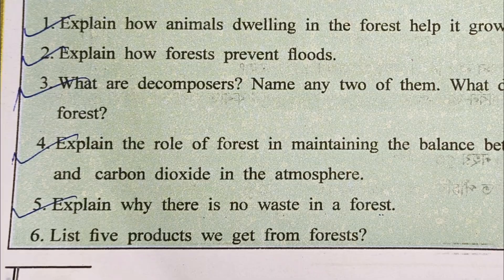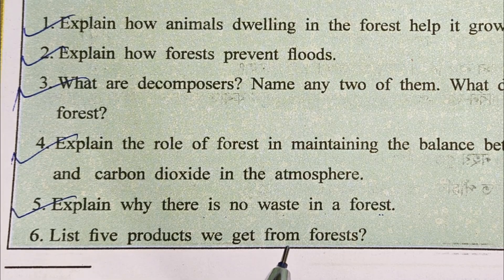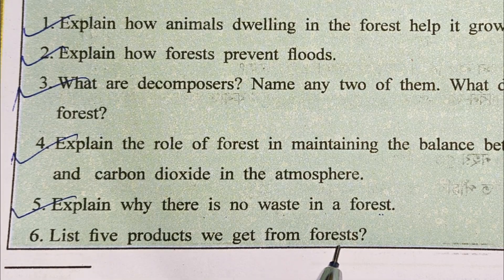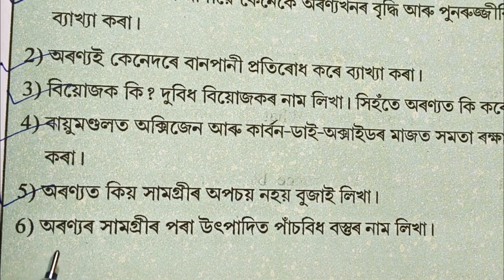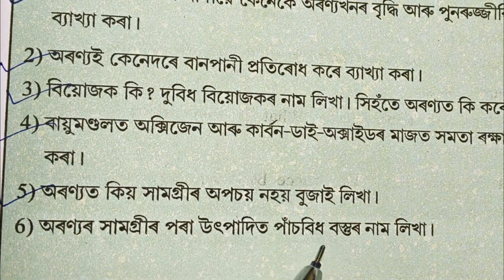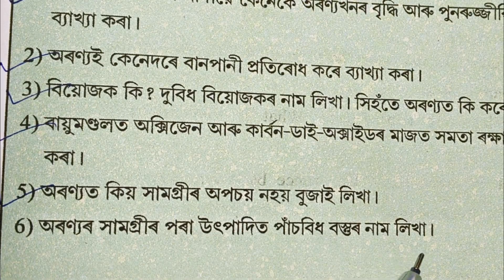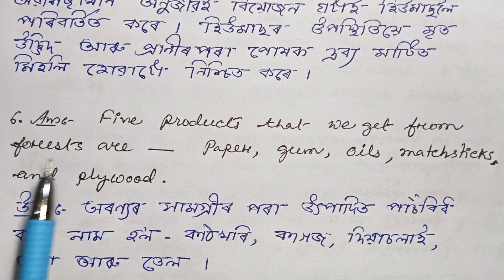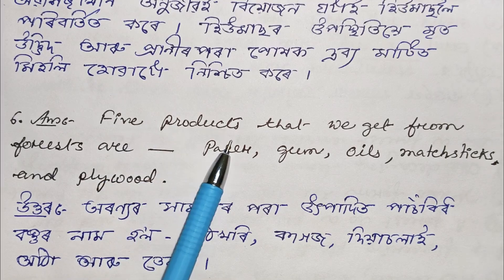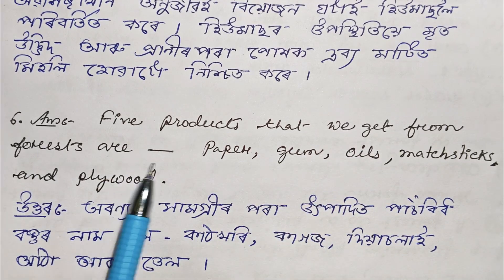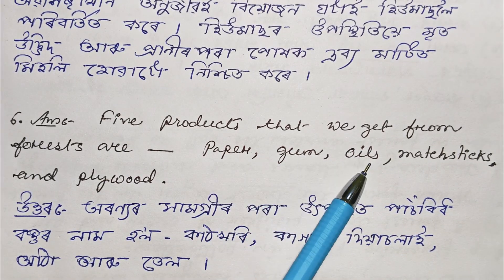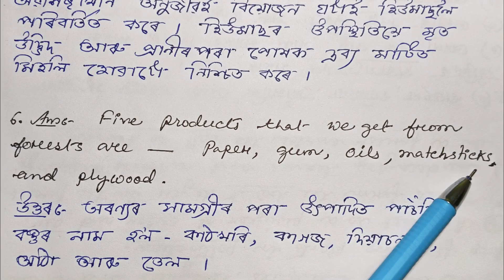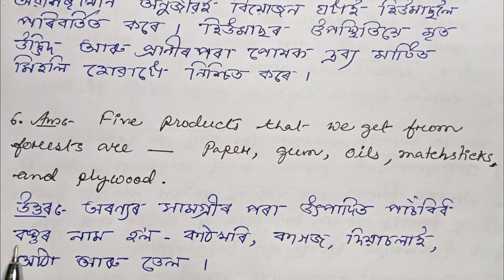Question number 6: List 5 products we get from forest. Five products that we get from forest are paper, gum, oils, matchstick, and plywood.